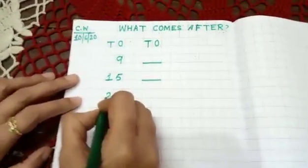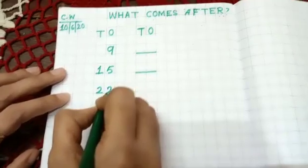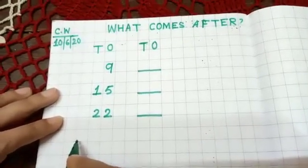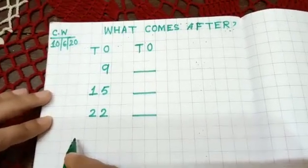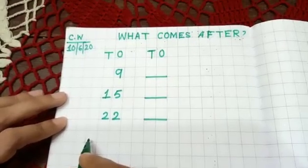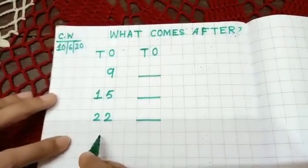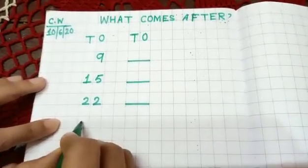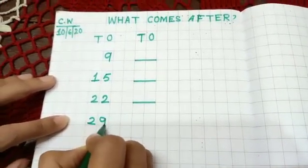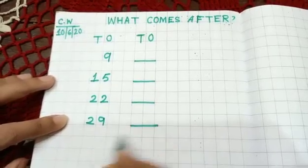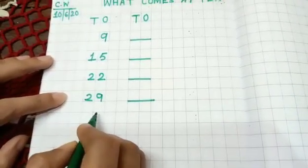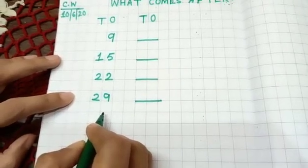Next one is twenty-two. Twenty-two next number is what. Twenty-two next number is what. Can you say twenty-two next number? Yes, very good. Next. Then here you will write twenty-nine. Twenty-nine next number is what. Twenty-nine next number, yes, very good.